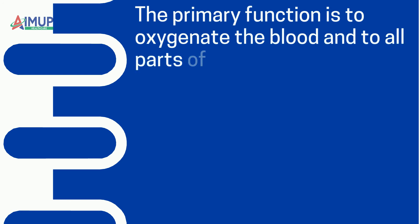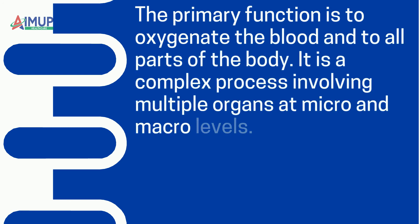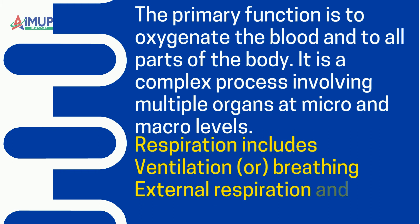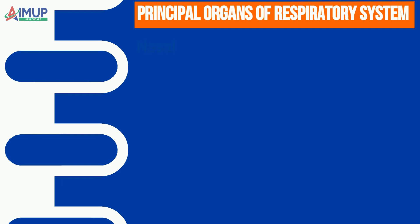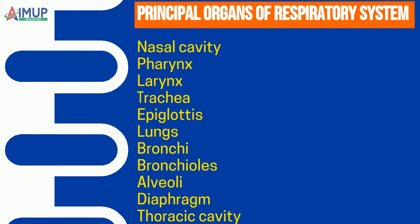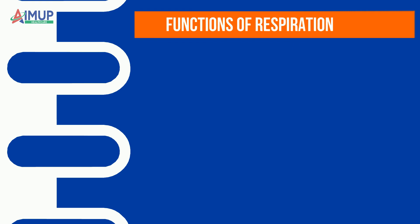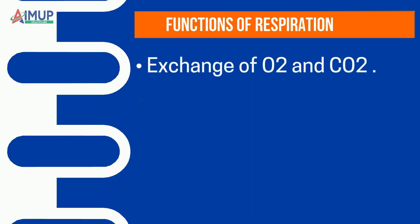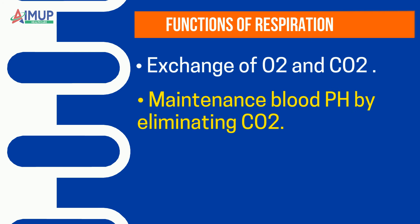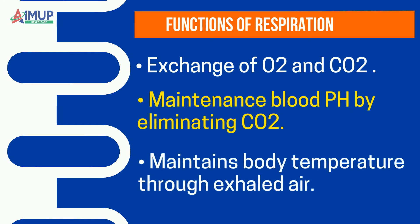The primary function of the respiratory system is to oxygenate the blood and deliver oxygen to all parts of the body. It is a complex process involving multiple organs at micro and macro levels. Respiration includes ventilation (breathing), external respiration, and transport of gas. Principal organs of the respiratory system include the nasal cavity, pharynx, larynx, trachea, epiglottis, lungs, bronchi, bronchioles, alveoli, diaphragm, and thoracic cavity. Functions of respiration include exchange of O2 and CO2, maintenance of blood pH by eliminating CO2, and maintenance of body temperature through exhaled air.